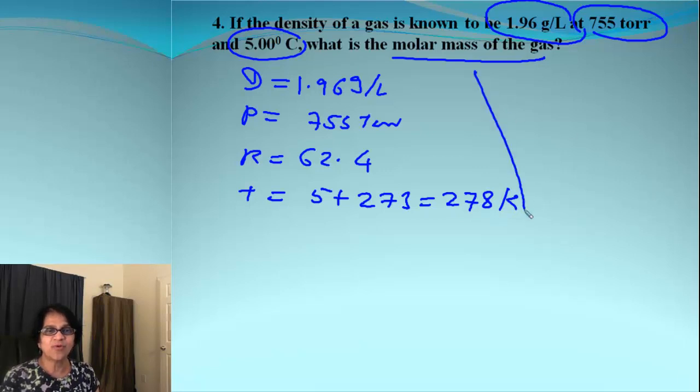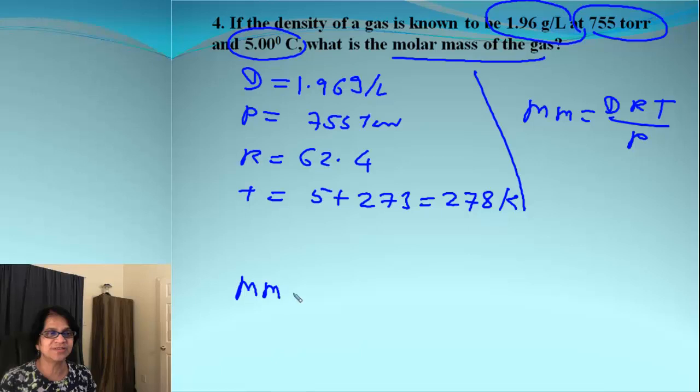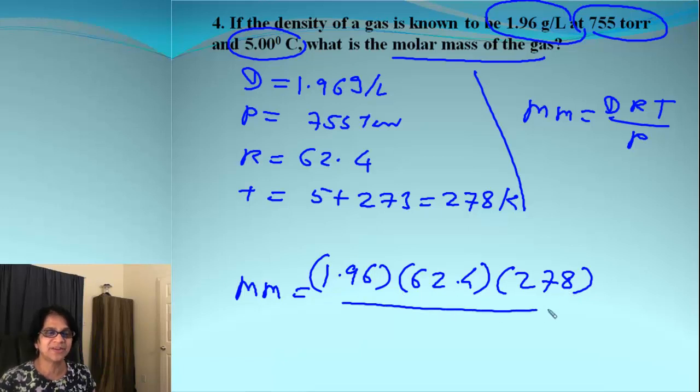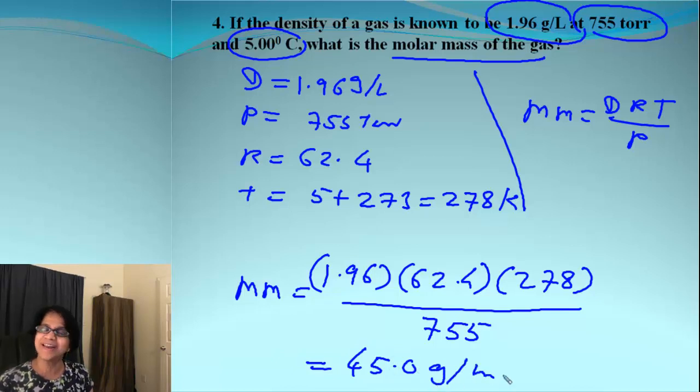And then what is the formula which we have? We have formula for molar mass equals DRT over P. We are going to simply plug the values in the formula. So we have molar mass equals density 1.96. Then we have R value, temperature here, and that divided by pressure, 755. And when we solve that, we end up getting 45.0 grams per mole as the molar mass.